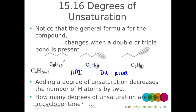Consider pentane, for example. In pentane, we have no rings and we have no double bonds. The molecular formula is C5H12. Pentane is fully saturated, meaning that it has all of the hydrogens it could possibly have. It fits the formula for an alkane: CₙH₂ₙ₊₂, where n is the number of carbons. So if we have 5 carbons, we're going to have 2×5+2, or 12 hydrogens, for a fully saturated molecule.